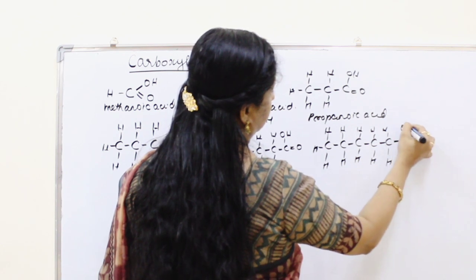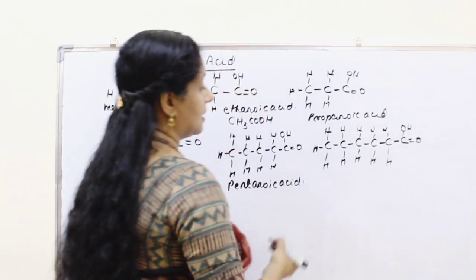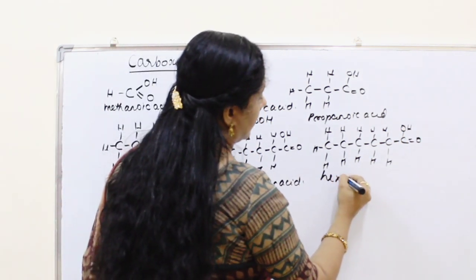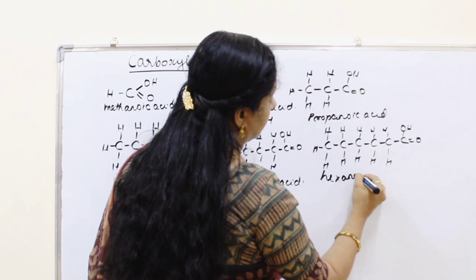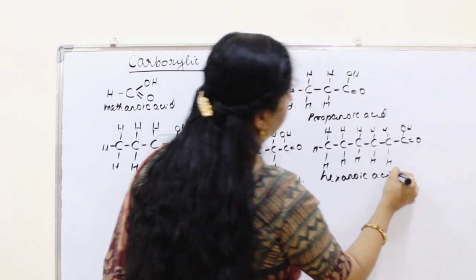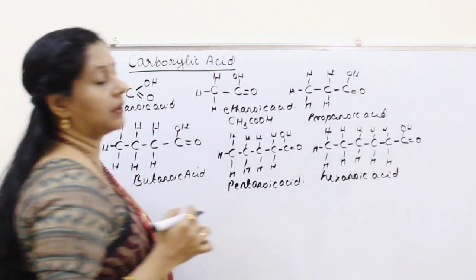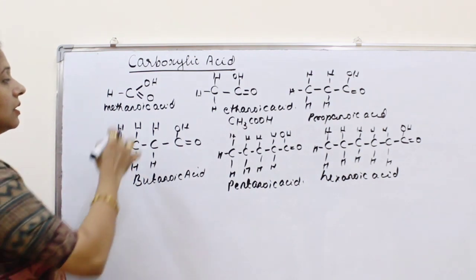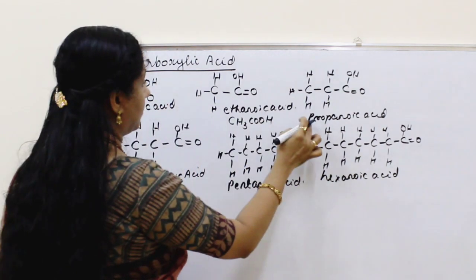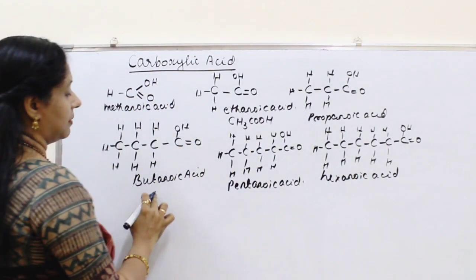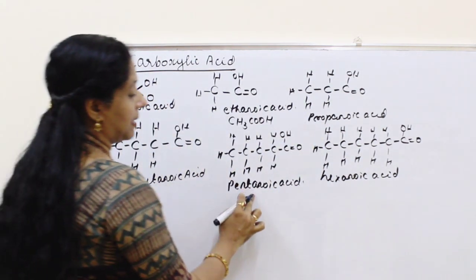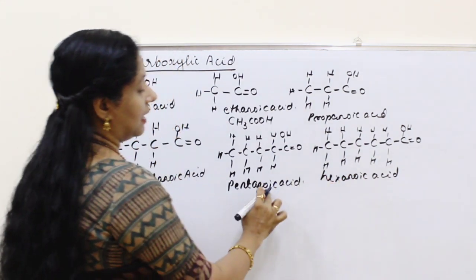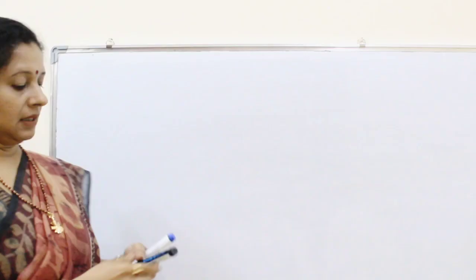The carboxyl functional group is added only at the end carbon. So the series is: methanoic acid, ethanoic acid, propanoic acid, butanoic acid, pentanoic acid, hexanoic acid. The name ends with '-oic acid'.